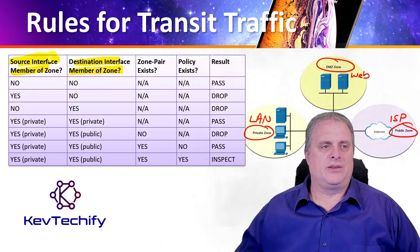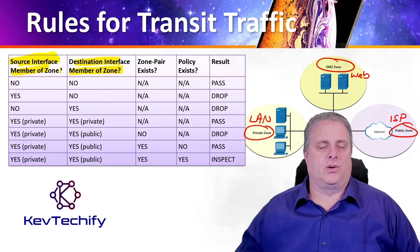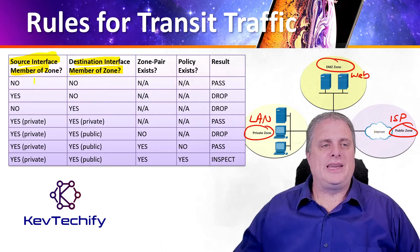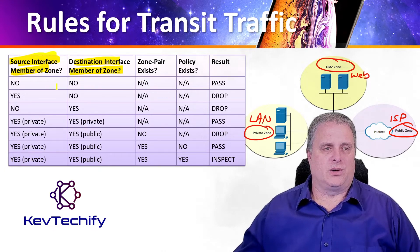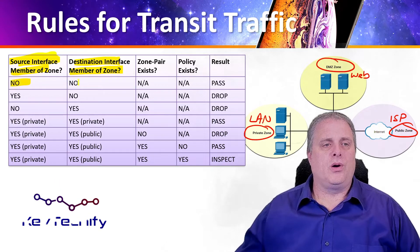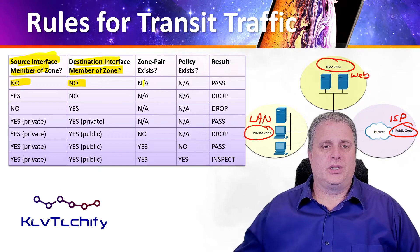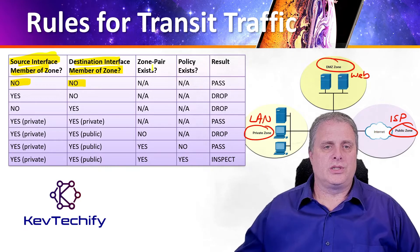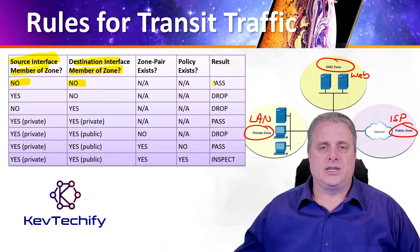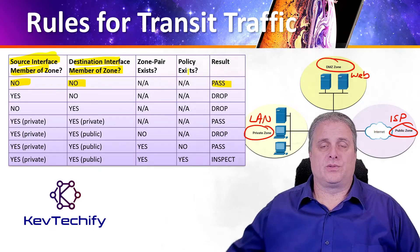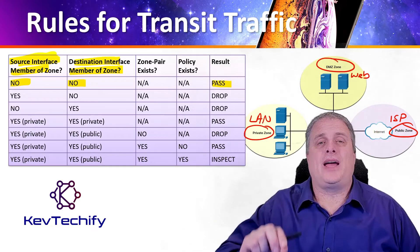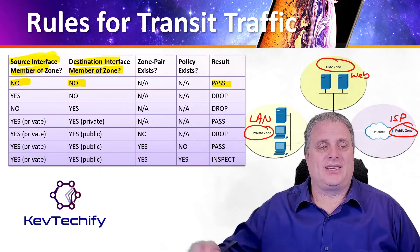We look at whether the source interface is a member of a zone, and whether the destination interface is part of a zone. If both answers are no — neither interface is a member of a zone — there is no zone pair and no policy, so we pass that traffic through.